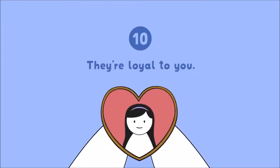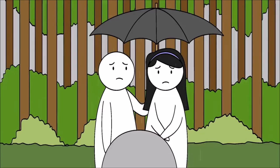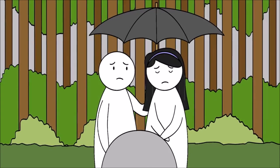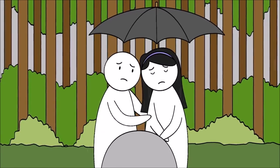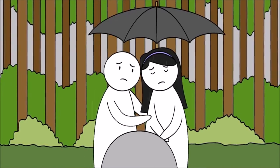10. They're loyal to you. Introverts make great partners because once they like you, they'll become protective. Although they don't like conflict, they won't shy away from it if it means that they're looking after you.